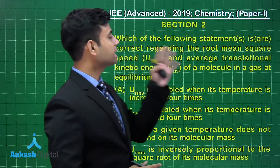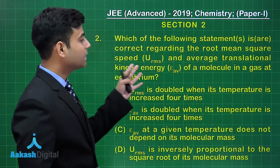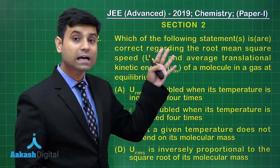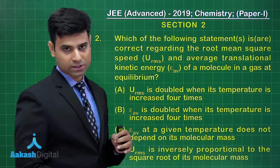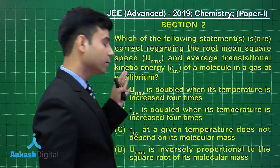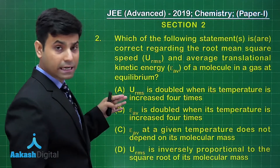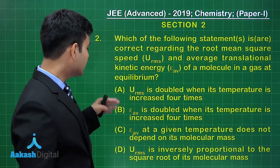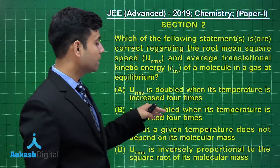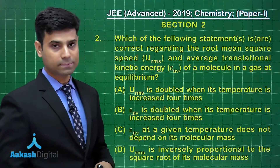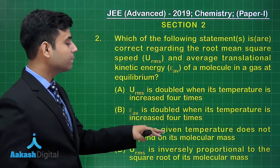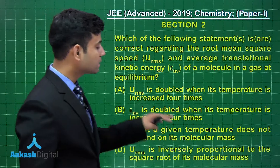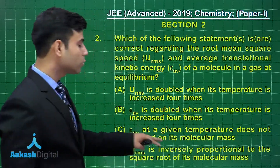The next question asks which of the following statements are correct regarding the root mean square speed (URMS) and average translational kinetic energy (E_avg) of a molecule in a gas at equilibrium. Option A: URMS is doubled when its temperature is increased four times. Option B: E_avg is doubled when its temperature is increased four times. Option C: E_avg at a given temperature does not depend on its molecular mass. Option D: URMS is inversely proportional to the square root of its molecular mass.